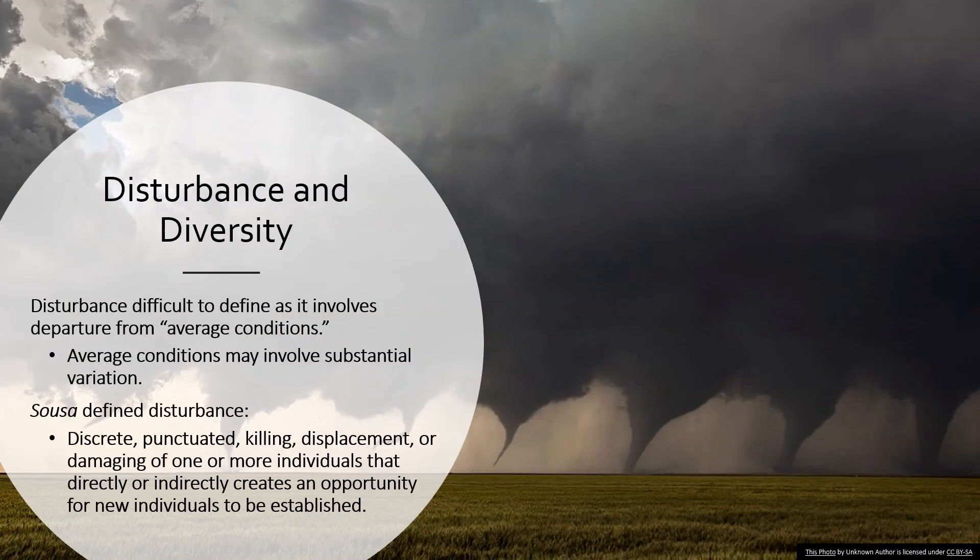There's been some controversy about how you actually define what a disturbance is. It's really something that's different from what you normally have — a departure from your average conditions. But your average conditions can have a lot of variability, so that makes it even harder to figure out what you would call a disturbance.